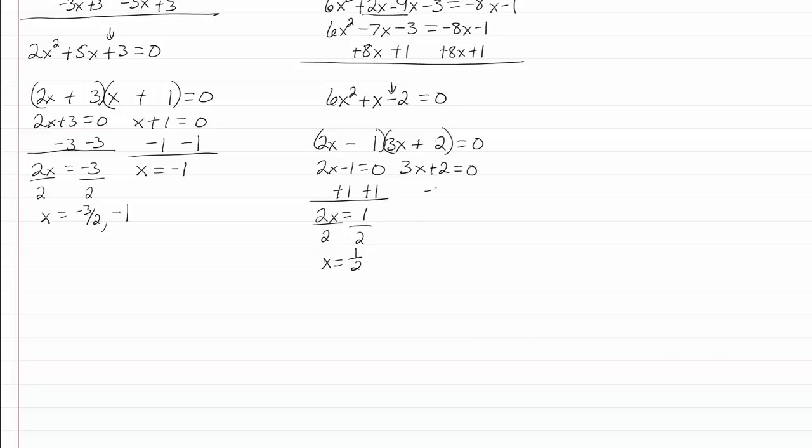Solving our second one, I'll subtract two from both sides, I get 3x equal to negative two, divide by three and x is equal to negative two-thirds. So my solution here is x equal to one-half and negative two-thirds.